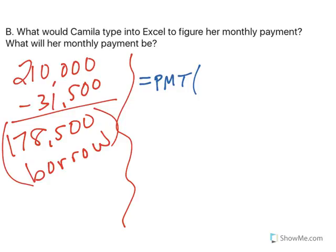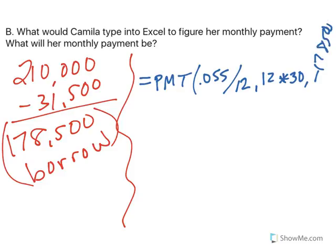For the interest rate, it said she's doing 5.5%, so we'll divide it by 12. She's doing 30 years, and she's borrowing $178,500. If you type that into Excel exactly like you see it, it's going to tell you that her monthly payment is $1,013.50.